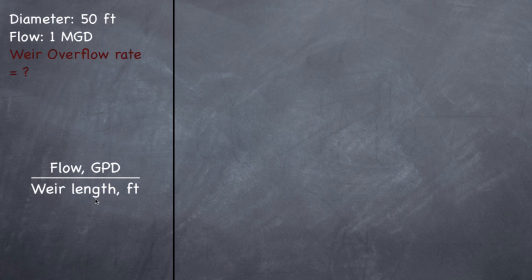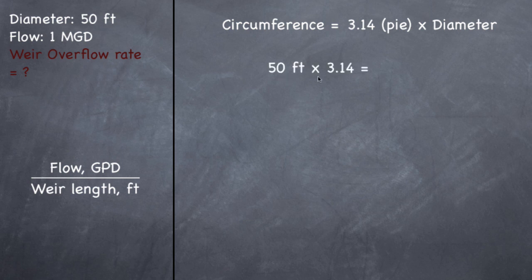So to find a length, you need to find the circumference. Remember, diameter is, if you cut the circle in half, how long that line is. Circumference is the distance all the way around the circle. So you need to find how long that weir is because it covers the entire circle. So to find that, circumference equals 3.14, which is pi, times the diameter. And that will give you how long it is around this circle. In feet. So we go ahead and do 50 feet, which is our diameter, times 3.14, which is pi. And you wind up with 157 feet. So all the way around this circle is 157 feet. If I were to take this circle and lay it out straight, it would be 157 feet long. And that's the weir length.